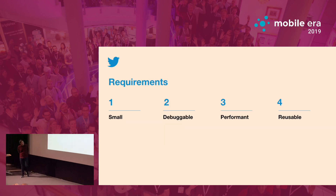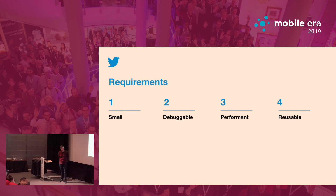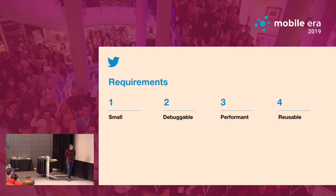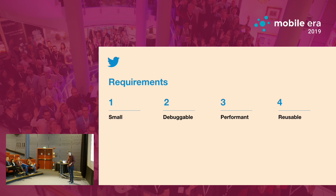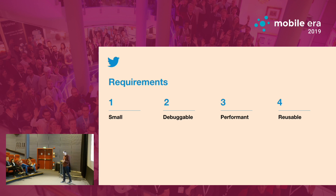Some requirements for the solutions we looked into: it needs to be small. On iOS and Android, the framework has to be less than a megabyte in size. On web, it has to be much, much smaller — less than a couple hundred kilobytes. We also wanted it to be debuggable — able to step through it, see variables and breakpoints like normal. We needed it to be performant, so fast or near-native performance. And we want something reusable — not just for our team, but usable by anyone at Twitter for any of their needs.